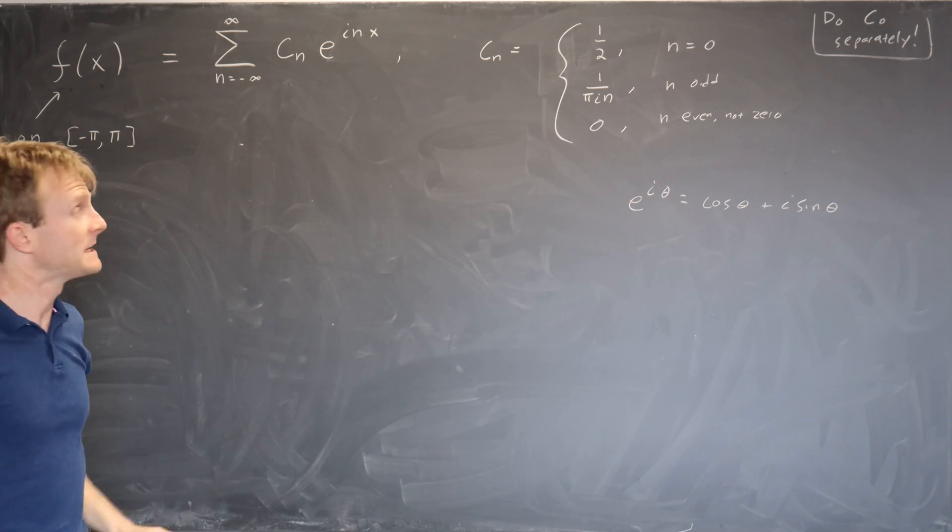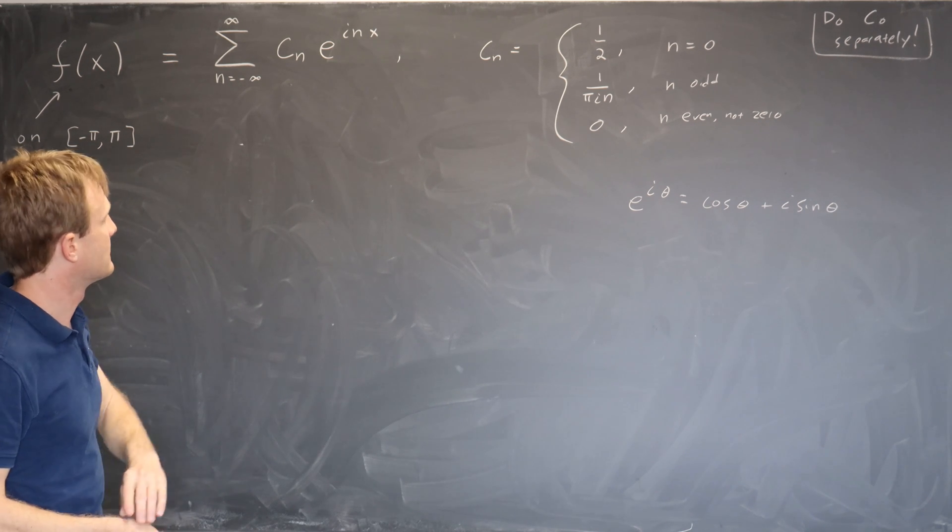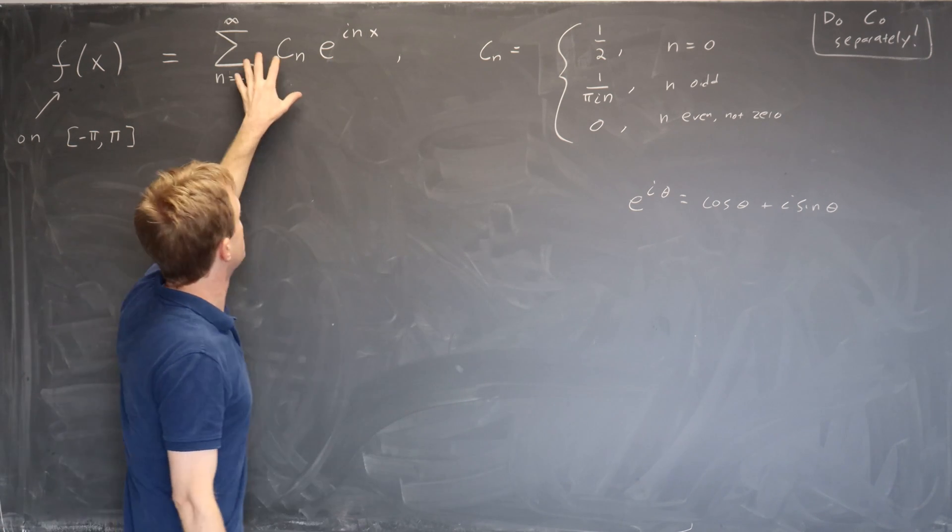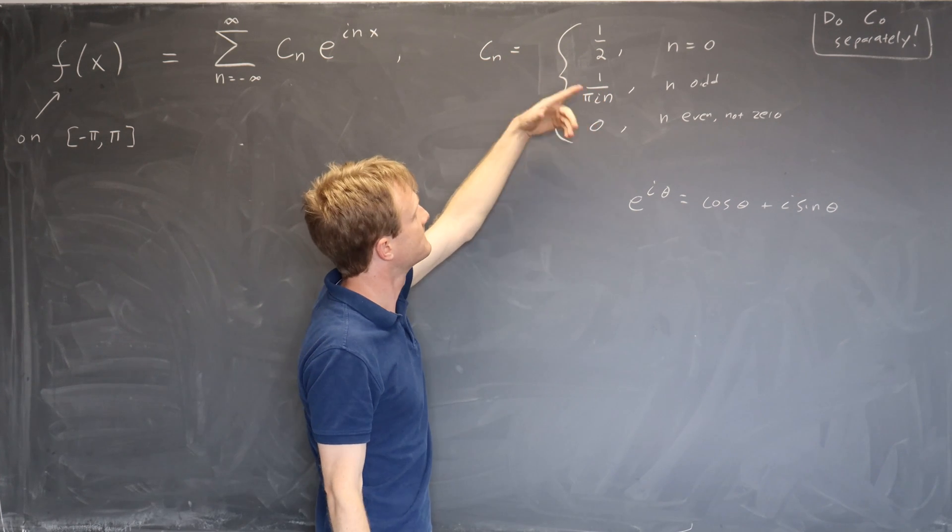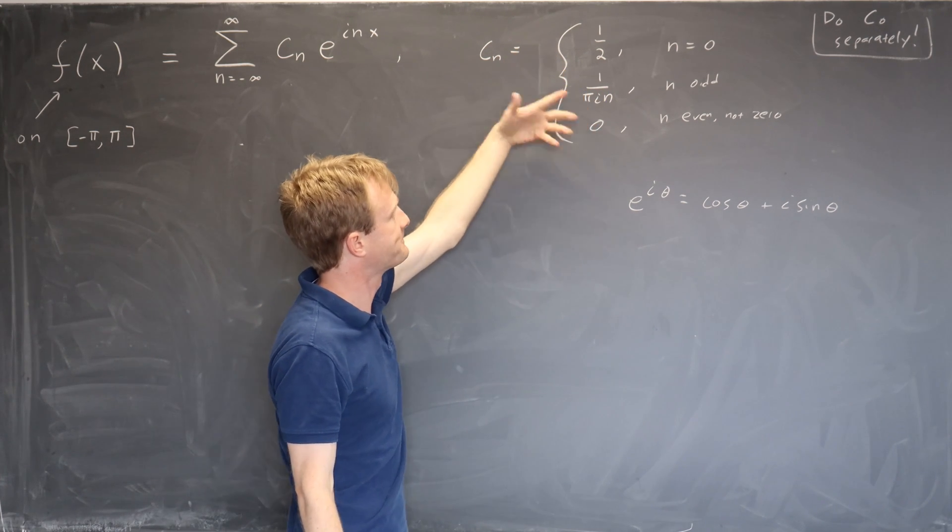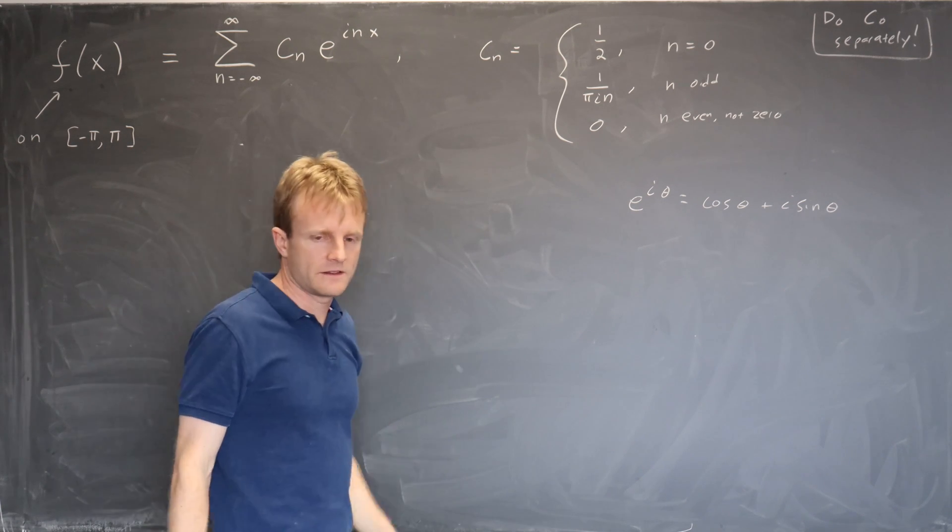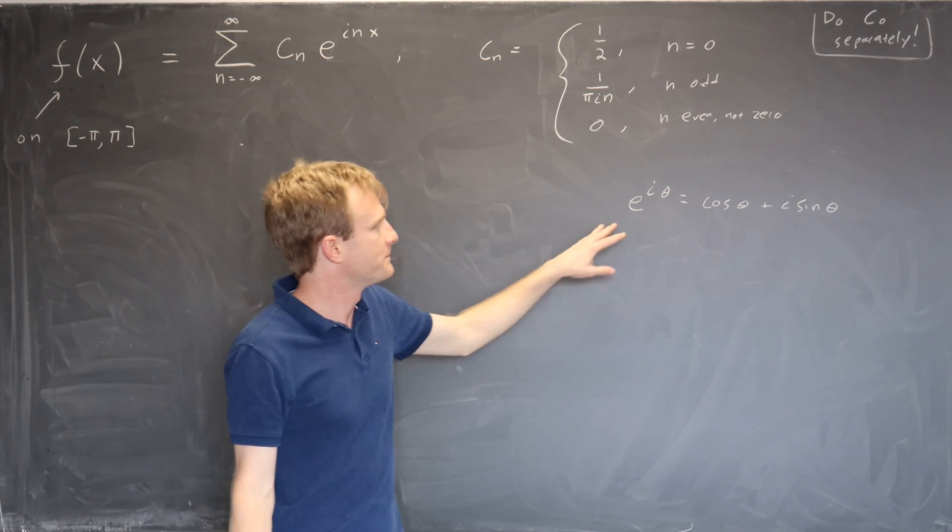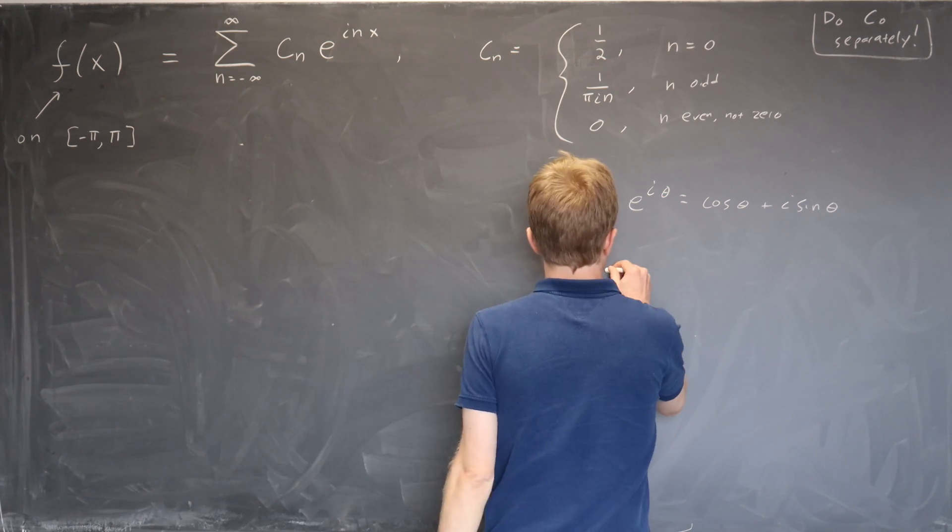Now the key formula of course is Euler's formula e to the i theta is cos theta plus i sine theta. But you don't really want to start plugging in right away because you have all these special cases and it's going to get quite unwieldy. So I have two recommendations for doing these types of problems. Recommendation one is write out terms explicitly at this stage. Don't leave it in this very precise but annoying notation.